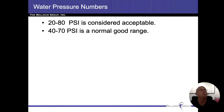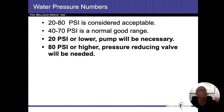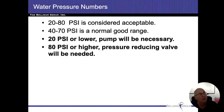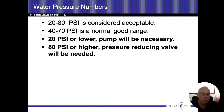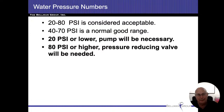These are going to be test questions. Any water pressure on a supply system between 20 and 80 PSI is considered acceptable. In our area, 40 to 70 PSI is what's considered normal. Anything under 20 PSI, you're going to need a pump. Anything over 80 PSI, you're going to need some sort of pressure reducing device. The 80 PSI limit is when we start getting into the valves for dishwashers, washing machines, and things that are automated to turn on and off.